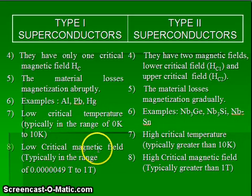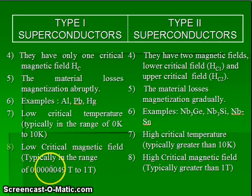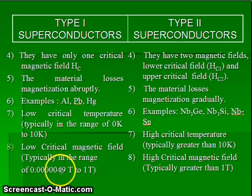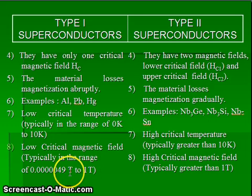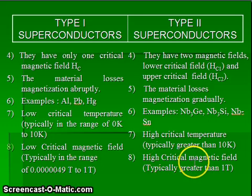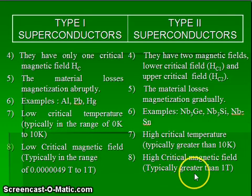Type 1 superconductors have a low critical magnetic field, typically in the range of 0.049 Tesla to 1 Tesla. Type 2 superconductors have a high critical magnetic field, typically greater than 1 Tesla.